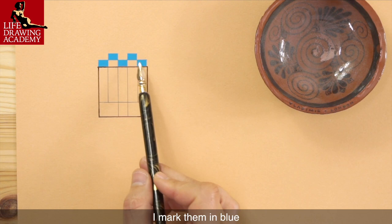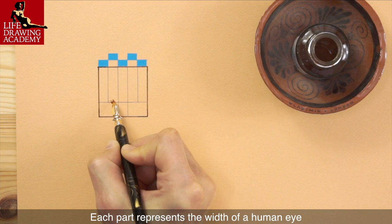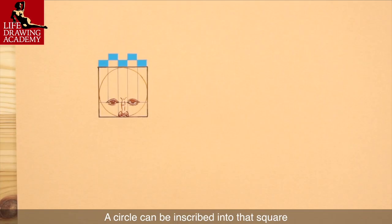The width of the square is divided into five equal parts. I mark them in blue. Each part represents the width of a human eye. A circle can be inscribed into that square. It spans from the top of the head to the base of the nose.